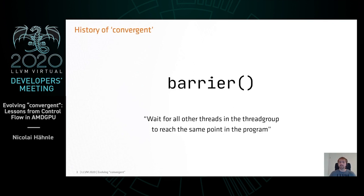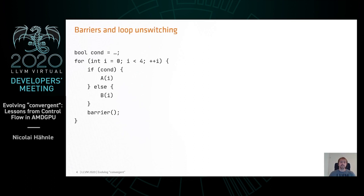Convergent was originally introduced for the barrier built-in that GPU programming languages tend to have. What the barrier does is it waits for other threads in what's called a thread group of the current thread for them to reach the same point in the program — not just to also reach a barrier, but to really reach the same point in the program, which has interesting implications for transforms.